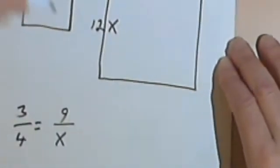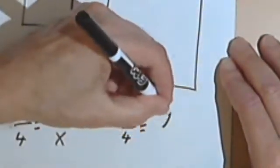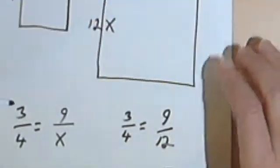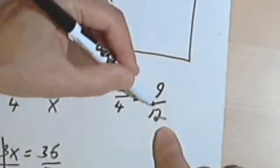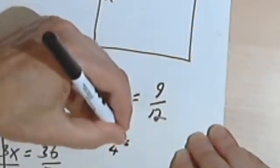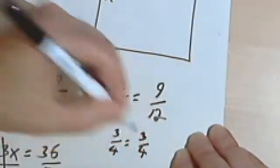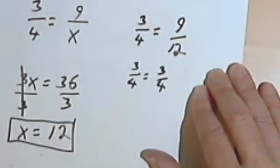And of course we can check that. We can take 3 fourths and see if it equals 9 over 12. And if we reduce 9 over 12, we'll divide the numerator and the denominator by 3. We're going to get 3 fourths equals 3 fourths. So this will work.